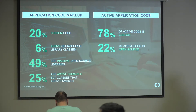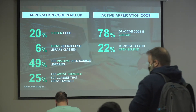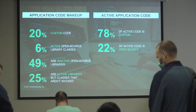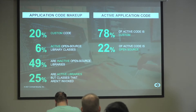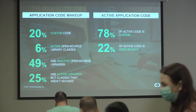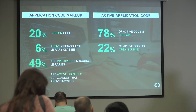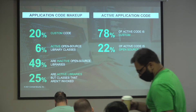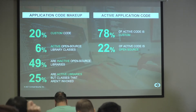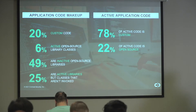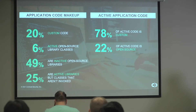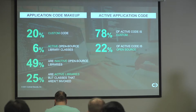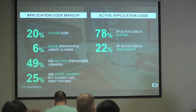The normal application code makeup is about 20 percent custom code, 6 percent active open source libraries, 49 percent inactive open source libraries, and 25 percent active libraries with plenty of classes that aren't even invoked. Forever we've said 'you have a CVE in this library' — but most of the time you're probably not even using that component, so there's no way to exploit it. What's actually used is 78 percent active code.